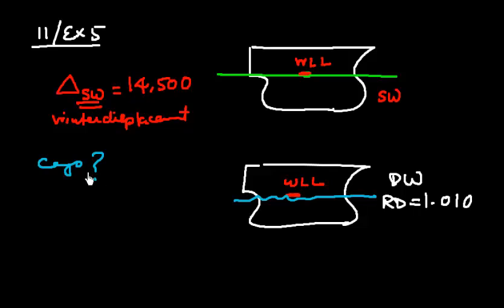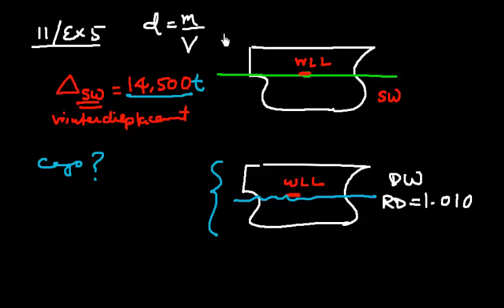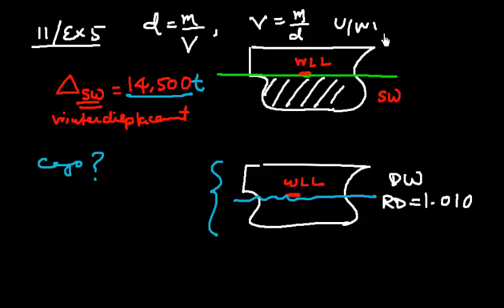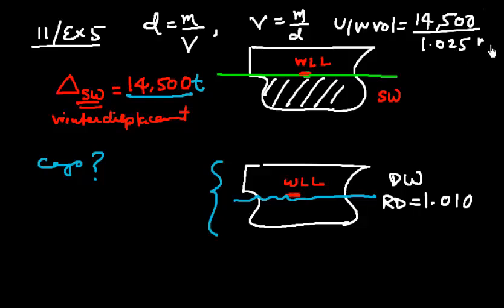So that she would float at the winter load line in salt water — this is the maximum displacement of 14,500 tons. We use the formula: density = mass / volume, so volume = mass / density. The underwater volume equals 14,500 divided by density 1.025, giving us the result in cubic meters.